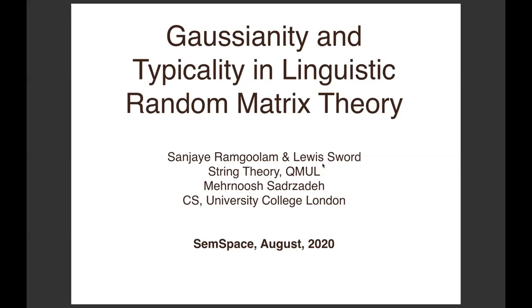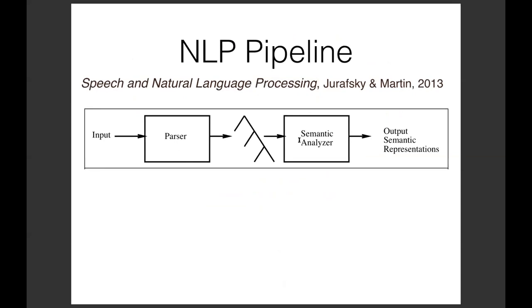So we heard a lot about DisCoCat and I thought maybe I'll waste some of my time explaining it. I put on what people think of as a natural language processing pipeline. This is from a standard textbook: you have some input, your natural language, it can be the rules of the grammar or a corpus of data, you pass it through a parser.